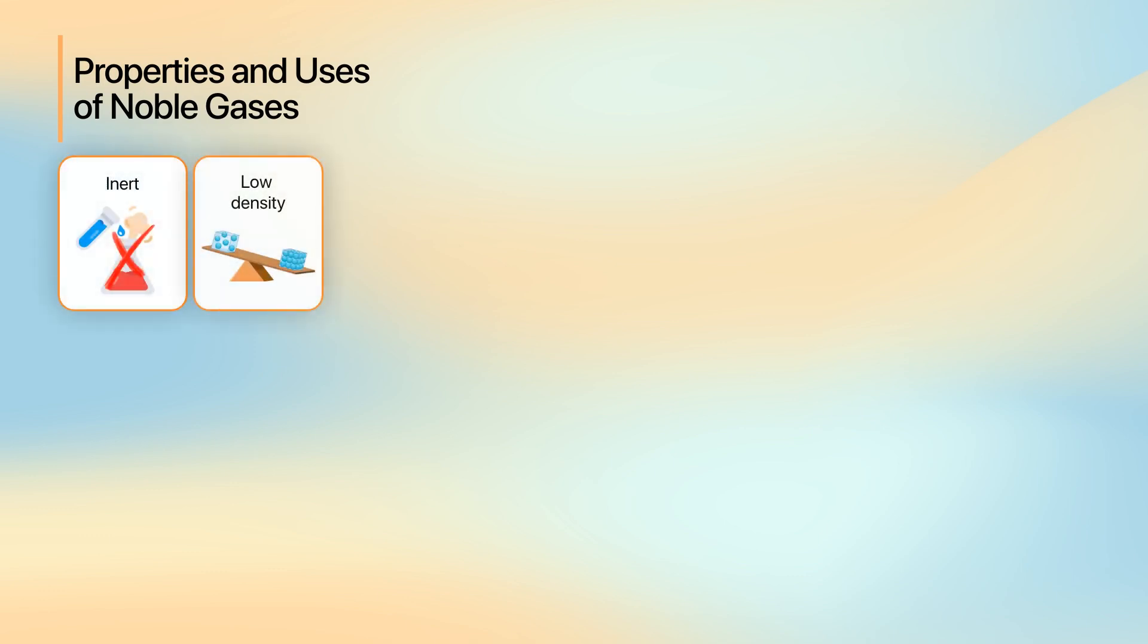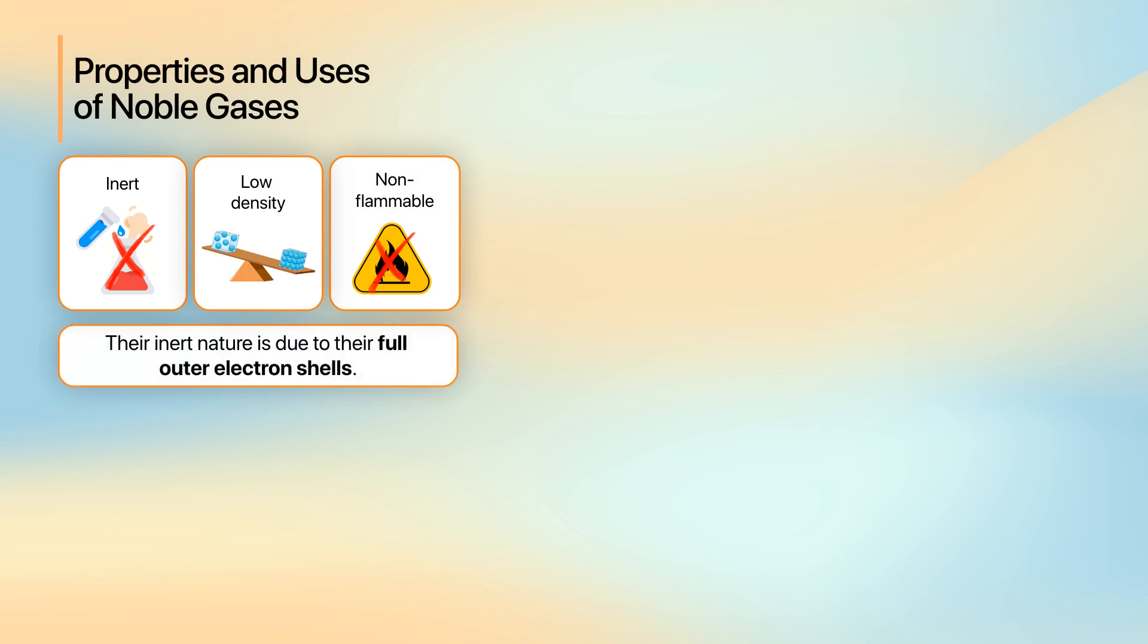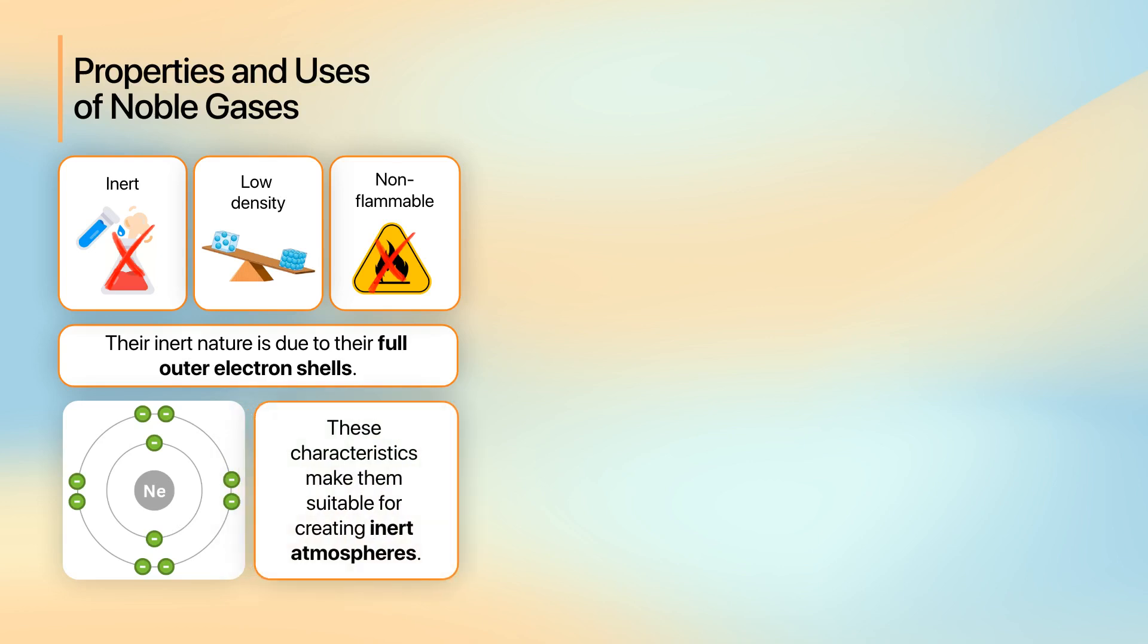Great work! That's everything for today. In today's lesson, we firstly looked at noble gases' inertness, low density, and non-flammability make them suitable for various practical applications. Their lack of reactivity is due to their full outer electron shell, which means that they do not easily lose electrons. These characteristics make them suitable for creating inert atmospheres.